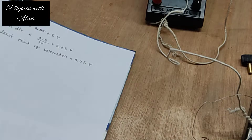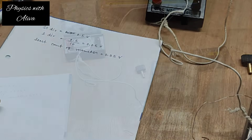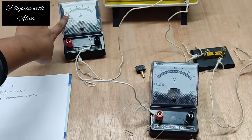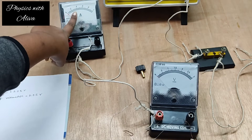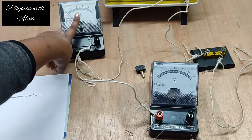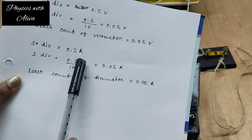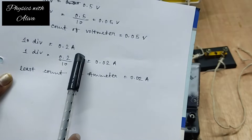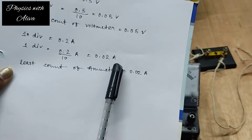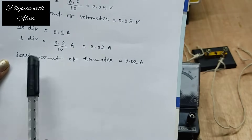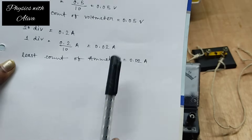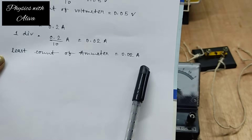Similarly we have to calculate the least count of the ammeter. In the ammeter we can see from 0 to 0.2, 10 divisions are there. So 10 divisions equals 0.2 ampere, meaning 1 division equals 0.02 ampere. Hence the least count of the ammeter is 0.02 ampere.